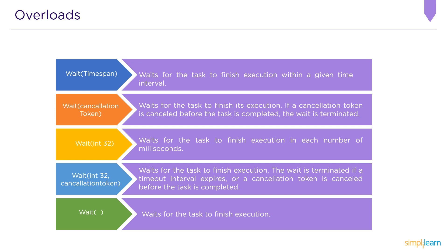The third overload is Wait(Int32), which states: wait for the task to finish execution in a given number of milliseconds. The fourth overload is defined as waiting for the task to finish execution; the wait is terminated if a timeout interval expires or a cancellation token is cancelled before the task is completed. The fifth and final overload is the basic Wait() function.